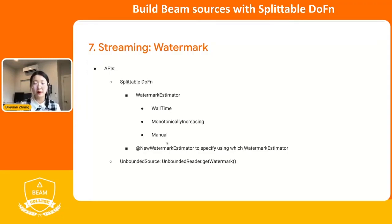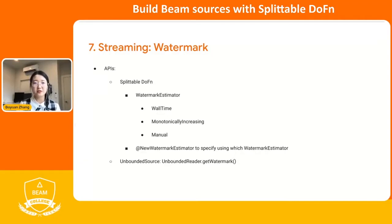The third one is the manual watermark estimator. Based on the name, you can use this in your process element function body and set the watermark by yourself, no matter what the value is, as long as it makes sense to you. There are two parts in Splittable DoFn when tracking the watermark. First, you need to create a watermark estimator and tell the Splittable DoFn what kind of watermark estimator you want to use — that is what the new watermark estimator interface does. The second part is to set the watermark in your process element function body.